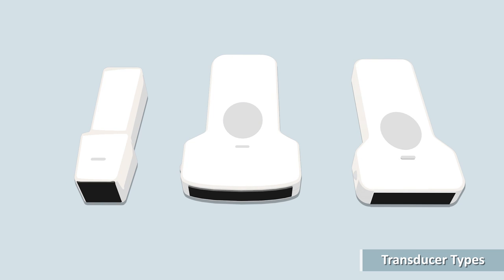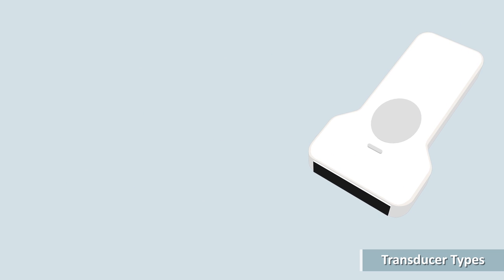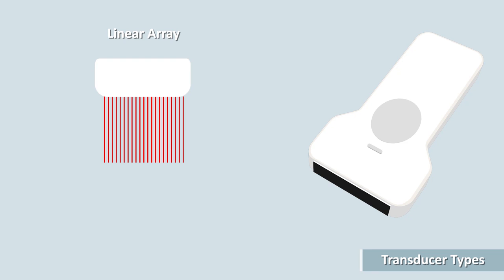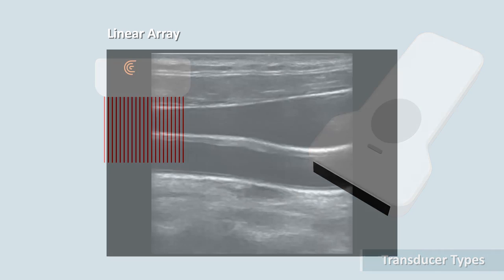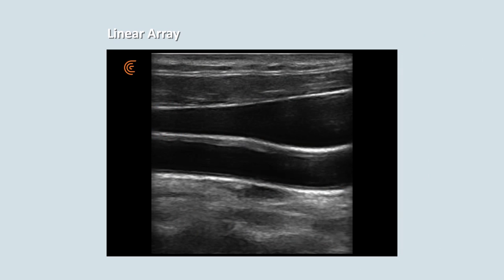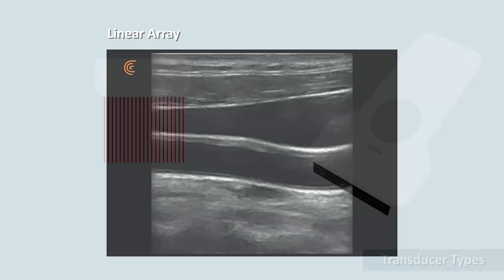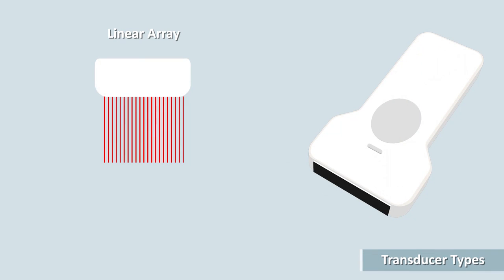The active elements in a linear array are arranged in a straight line and typically not steered. This results in evenly spaced beams and the best resolution. Higher frequencies are usually used in linear transducers, which works well for vascular and superficial soft tissue studies.